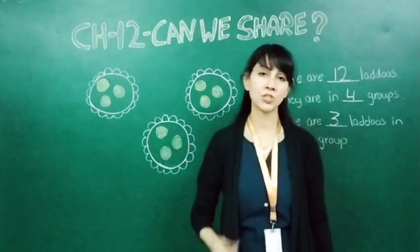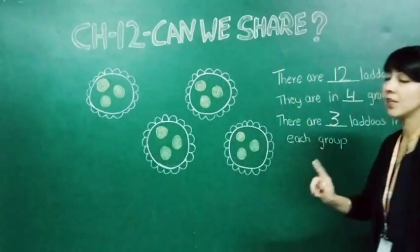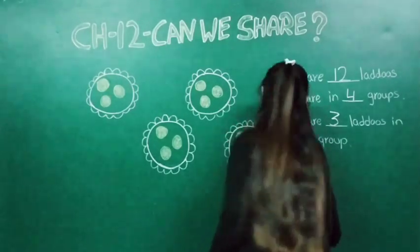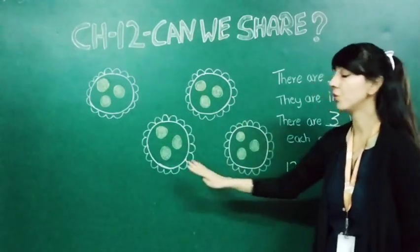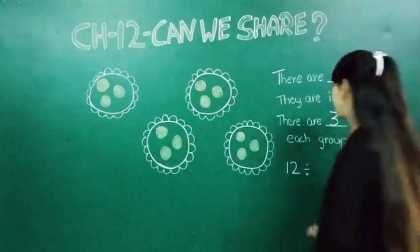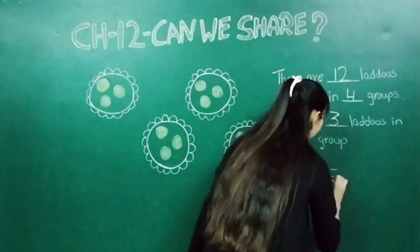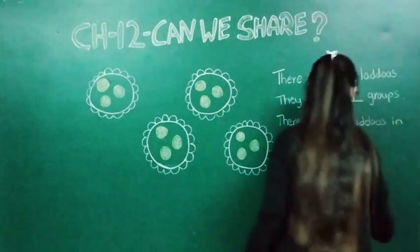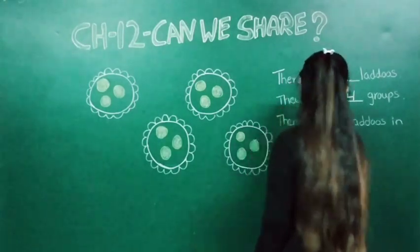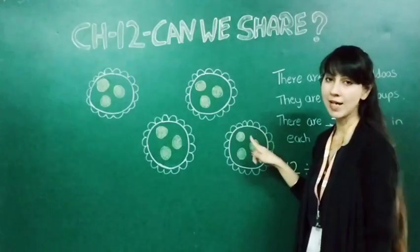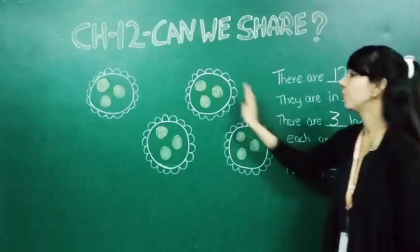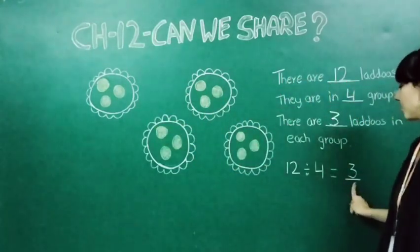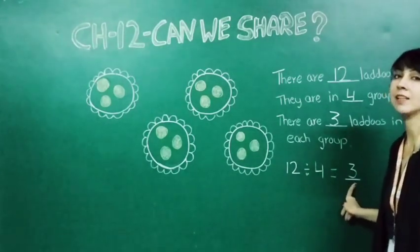Now let us see the division method. Total number of ladoos we will write — that is twelve — divided by four. Why four? Because here you can see four groups are there. When twelve comes in the table of four, four threes are twelve, so here it will come three. Total ladoos: twelve, divided by four groups — in each plate you can find three ladoos. With the help of division, we can easily find out how to divide equally into equal groups.